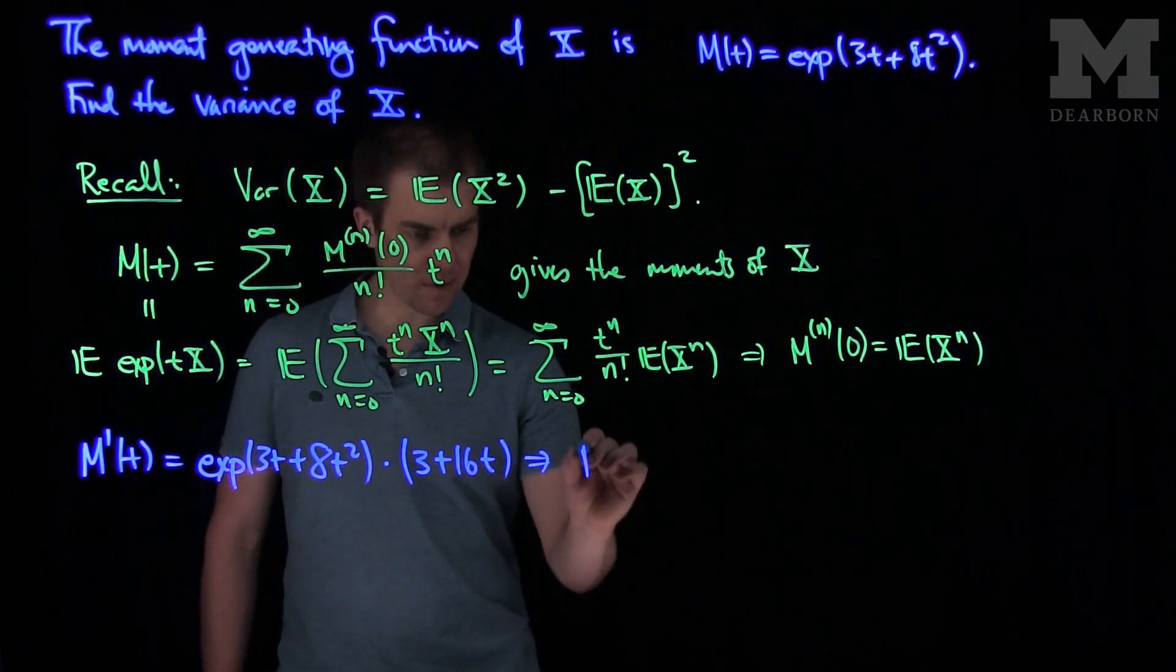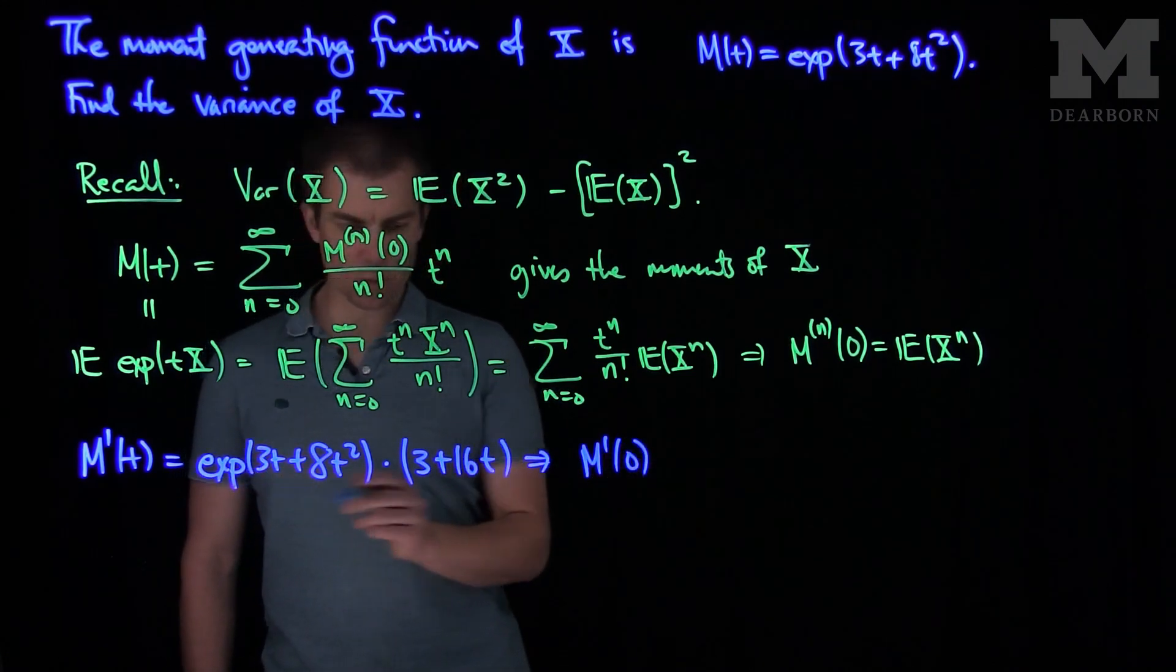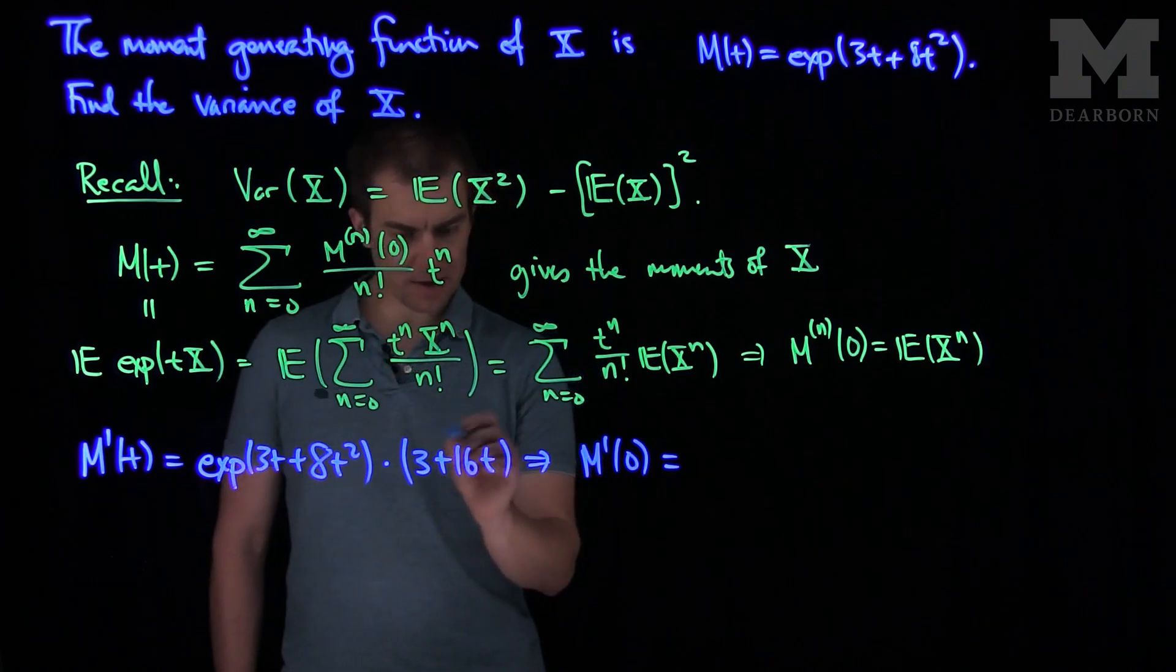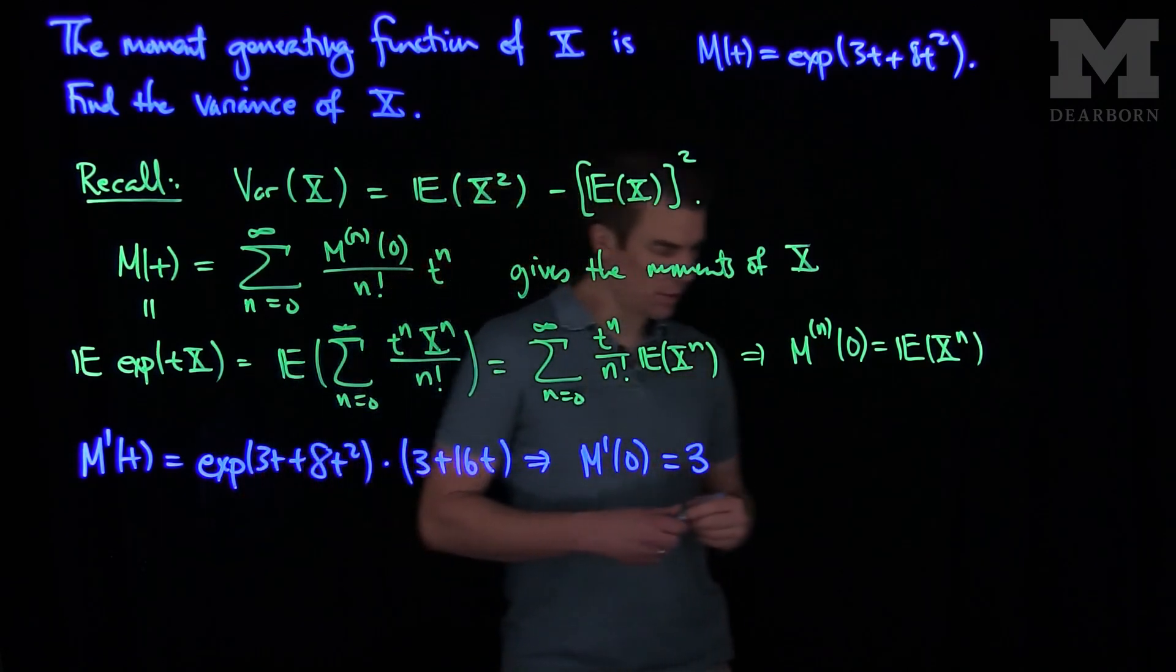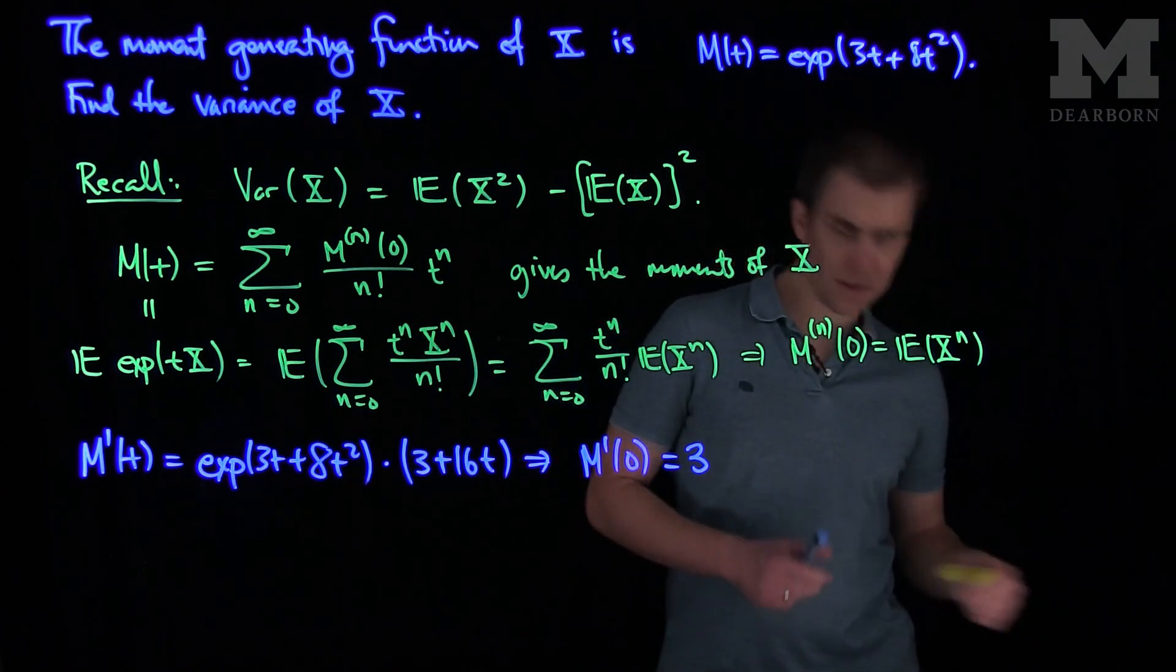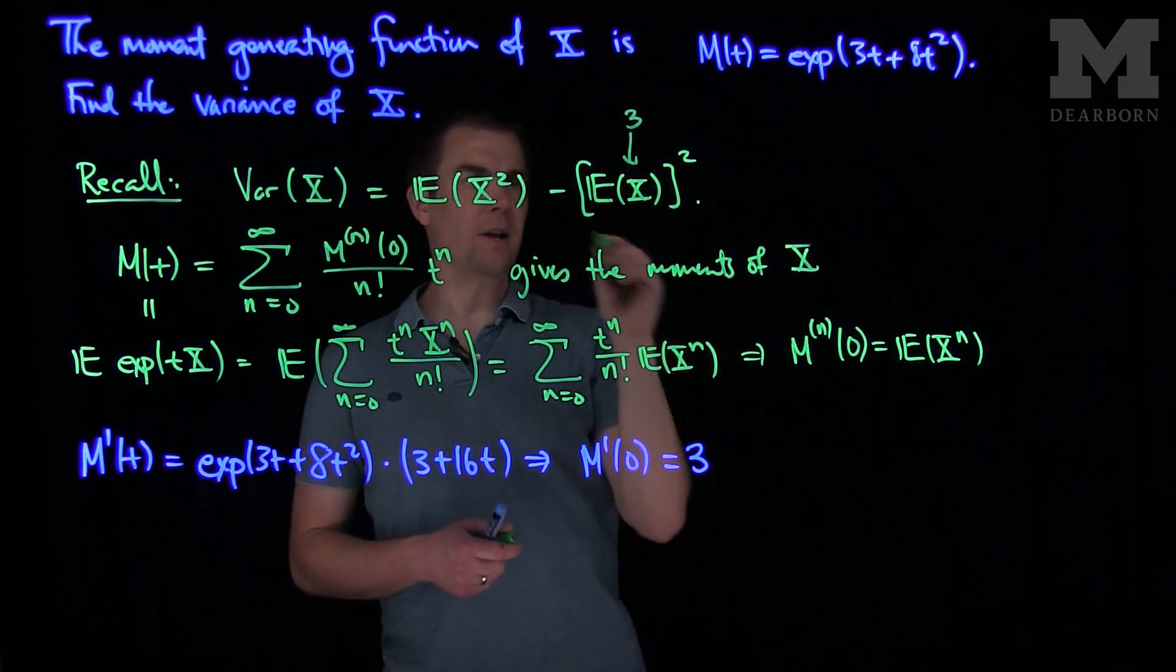And so if I plug in M'(0), this will be the exponential of 0, which is 1, and this will give me 3 plus 16 times 0. So M'(0) is equal to 3. And that tells us that the expected value of X is 3, and 3 squared will be 9.